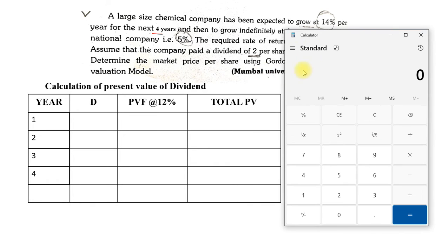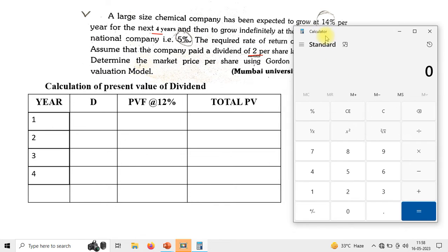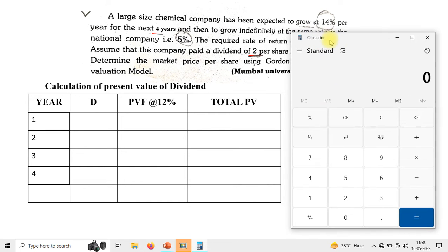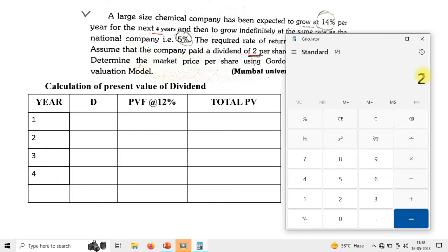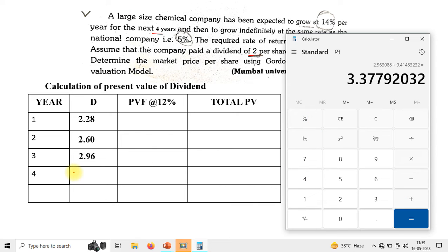Now, how to calculate the dividend. The dividend given in the question is two rupees per share. Growth is at 14% every year, so two rupees plus 14% gives us 2.28 — that is the first year's dividend. Then plus 14% for the next year gives 2.60. Again plus 14% gives 2.96, and plus 14% gives 3.37 for year four.